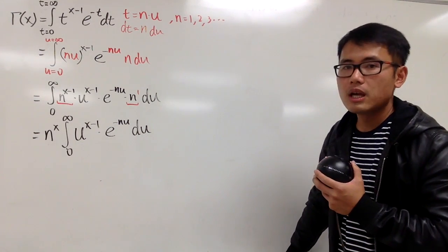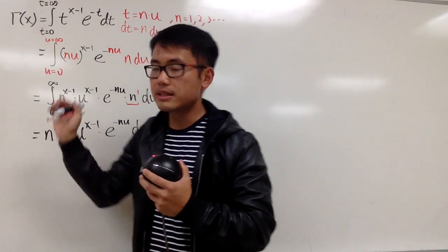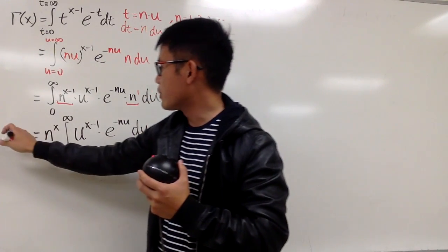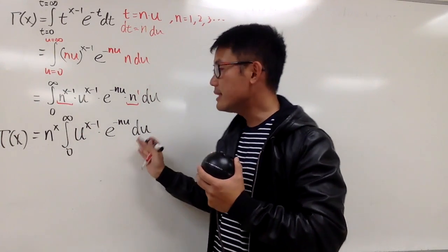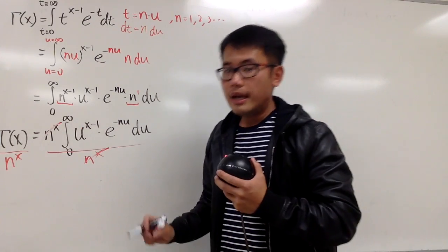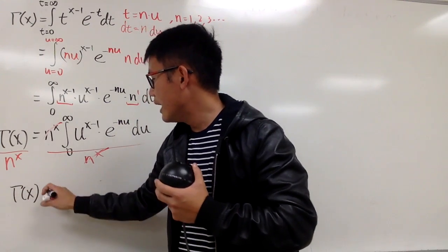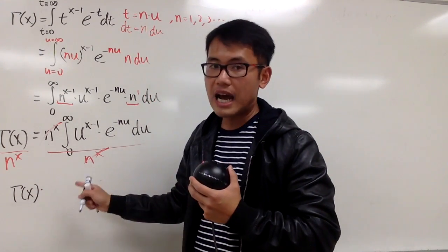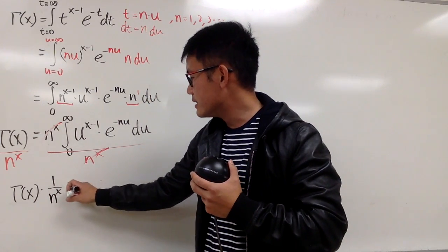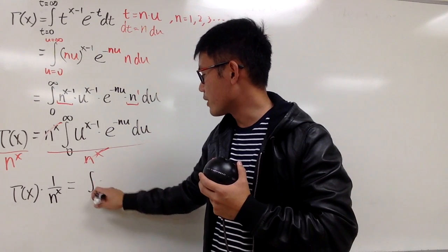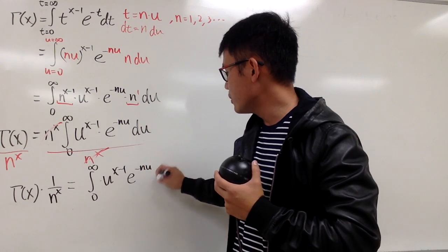So on the left-hand side we have gamma of x, and this is what we can do: gamma of x equals n to the x times that integral. Let's divide both sides by n to the x, giving us gamma of x times 1 over n to the x, equals the integral from 0 to infinity of u to the x minus 1 times e to the negative nu, du.